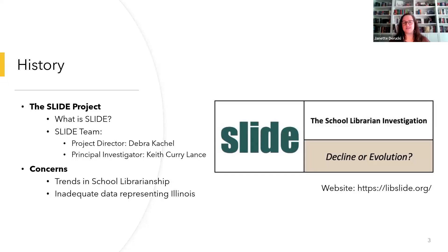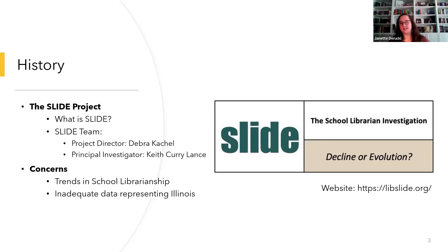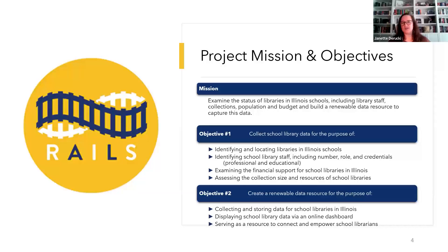You might be wondering why Rails launched this project, and more specifically, why now? To answer that, let me start with some background information. Some of you may be familiar with a three-year study called the Slide Project. According to their website, its main purpose is to determine patterns in the continuing national decline in school librarian positions and how school districts decide to staff library resources, learning resources, and instructional technology programs for K-12 students. The team at Slide acquired comprehensive data about school libraries from all 50 states. In the process, principal investigator Keith Curry-Lance noted a remarkable amount of missing data from the state of Illinois — nearly half of all the data representing Illinois schools was unaccounted for. This prompted him to reach out to Rails, and as a result, the Rails School Library Data Project was launched in January 2022.